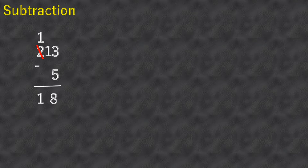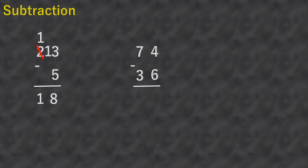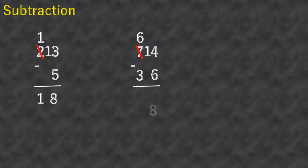Seventy-four minus thirty-six. Four minus six is not possible, so we'll borrow one from the seven — it will become six, and the four will become fourteen. Fourteen minus six equals eight, and then six minus three equals three. So seventy-four minus thirty-six equals thirty-eight.